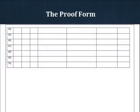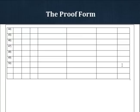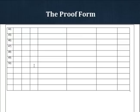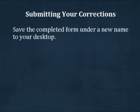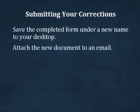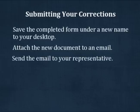50 lines are included in the form, but if you have more than 50 corrections, you can add additional lines by clicking inside the last block and hitting the tab key. You can continue tabbing to add however many lines you need. When you are finished filling out the form, save it under a new name to your desktop. Then attach the new document to an email and send it to your representative. If you are not sure who to send the document to, please call us and we will be happy to look this up for you.